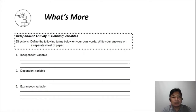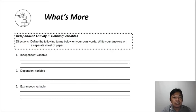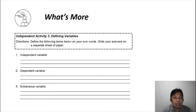For the third activity, define the following terms in your own words and write your answer on a separate sheet of paper. This is our generalization — I want you to define the three types of variables: independent, dependent, and extraneous. Use your own words.